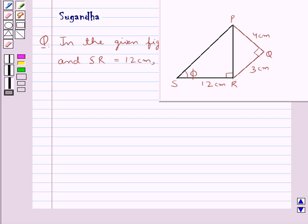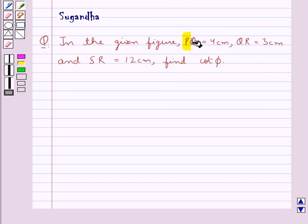In the given figure, PQ is equal to 4 cm, QR is equal to 3 cm, and SR is equal to 12 cm, find cot φ.